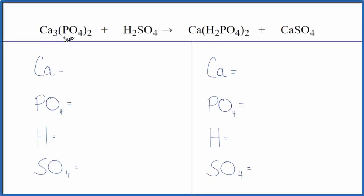To balance this equation, Ca₃(PO₄)₂ plus H₂SO₄, this is calcium phosphate plus sulfuric acid. Let's count the atoms up, and we'll use a little bit of a trick to make that easier since we have these polyatomic ions here that are on both sides.